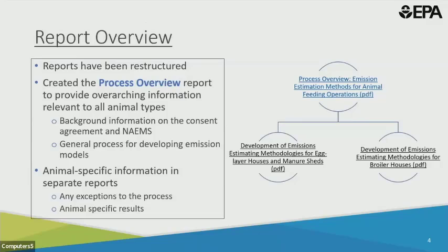We've restructured the reports since the swine report was released. We split off the material that applies to all animal types into the process overview or all-sectors report. This includes background information on the consent agreement and the NAMES study, a summary of the data collected during NAMES, and an overview of the model development process. This prevents the information from being repeated in every report, which streamlines individual animal type reports. The individual animal type reports include specific information on that animal type, containing literature review, exploratory data analysis, and other details of the model development process specific to that animal type. So all the information on layers is contained in one report and broilers is in a separate report.